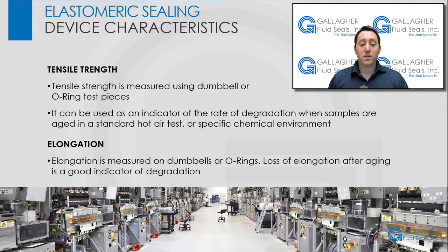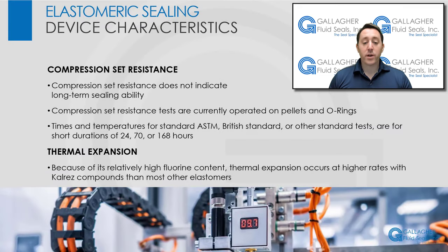Tensile strength is measured using dumbbell or O-ring test pieces. It can be used as an indicator of the rate of degradation when samples are aged in a standard hot air test or specific chemical environment. Elongation is measured on dumbbells or O-rings; loss of elongation after aging is a good indicator of degradation. Compression set resistance, although a good quality control test, does not indicate long-term sealing ability. This test is currently operated on pellets and O-rings. Times and temperatures for standard ASTM, British Standard, or other standard tests are for short durations of 24, 70, or 168 hours. Consequently, these tests do not take long-term aging of the elastomer into account.